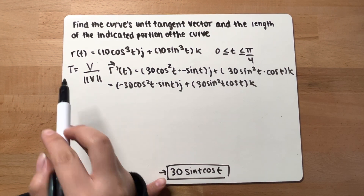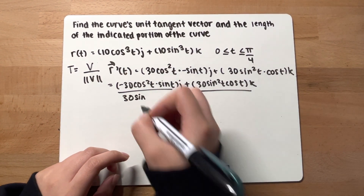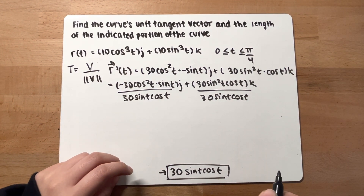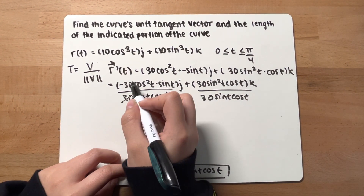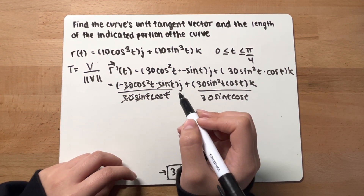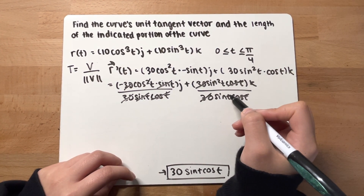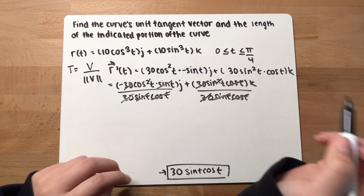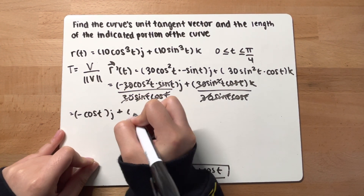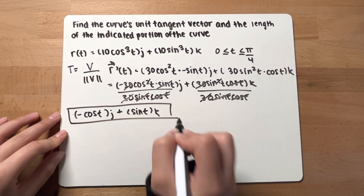To find the unit tangent, divide the velocity vector by the magnitude. You have the velocity components divided by 30 sine t cosine t. The 30s cancel, the sine t cancels on one side, and the cosine t cancels on the other, leaving you with negative cosine t j plus sine t k. This is your unit tangent vector.